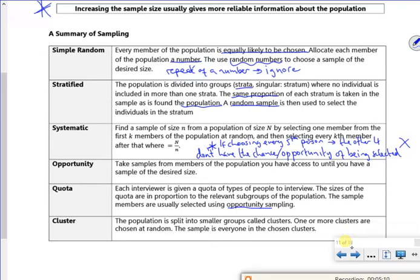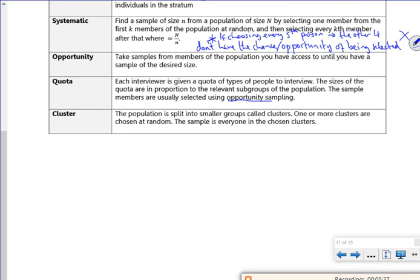Cluster sampling is where we split the population into smaller groups and the clusters are chosen at random. And then the sample is everyone within that chosen cluster. That one's not really come up very often, to be honest, which means it'll come up here. All right, next page.